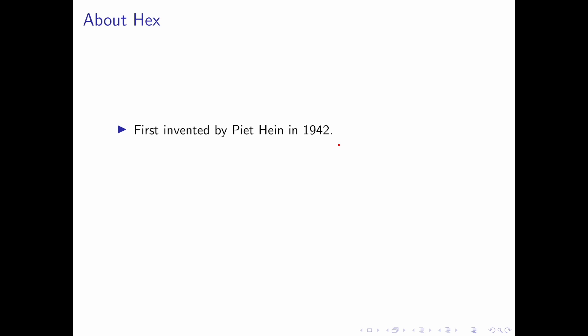The Game of Hex was first invented by Piet Hein in 1942 and it was later rediscovered by John Nash at Princeton. It is a game of perfect information meaning at any given point in time, both players know everything there is to know about the game.